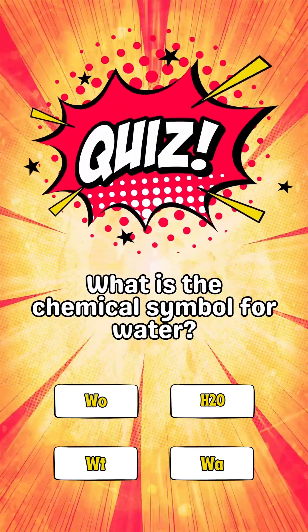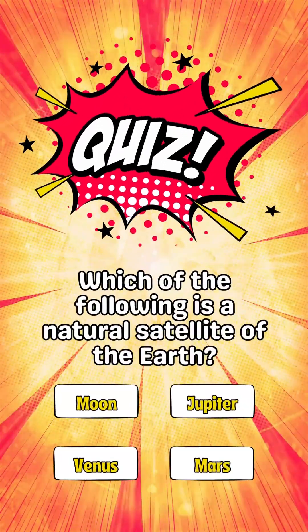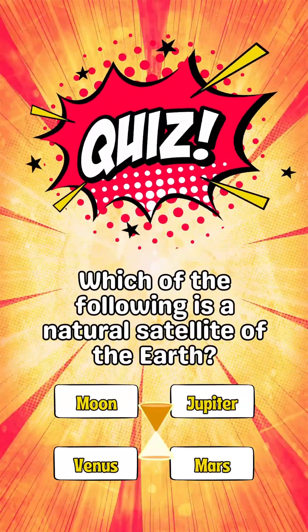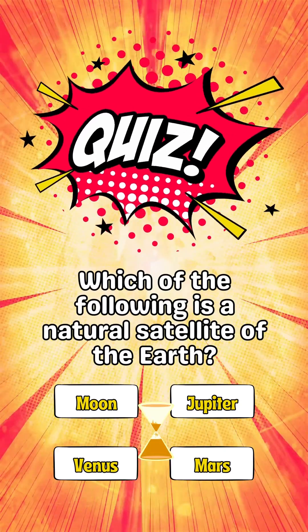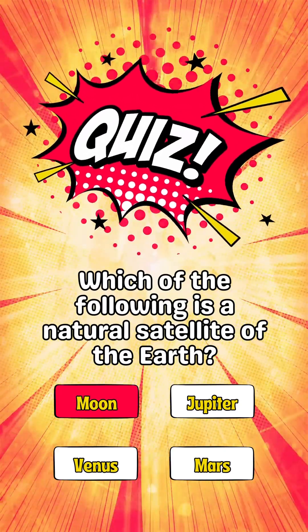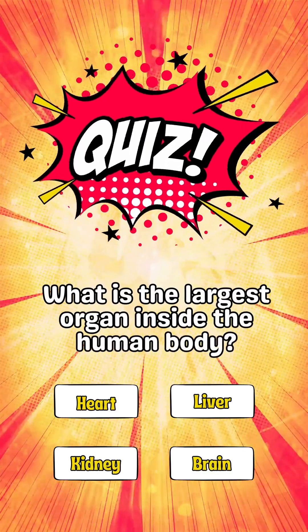The answer is H2O. Which of the following is a natural satellite of the earth? The answer is moon. What is the largest organ inside the human body?